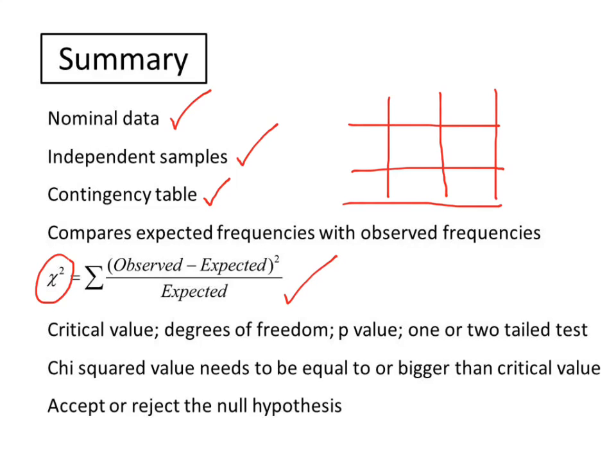To find out if the chi-squared value is significant, we need to use the statistical tables to find a critical value by working out the degrees of freedom and selecting an appropriate probability value, usually 5%, and determining whether we have a directional or non-directional hypothesis. Chi-squared value needs to be equal to or bigger than the critical value in order to accept or reject the null hypothesis.